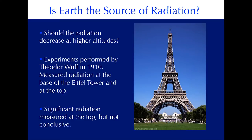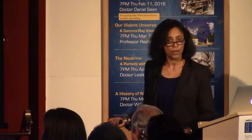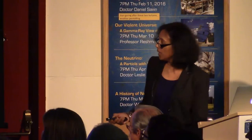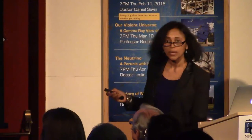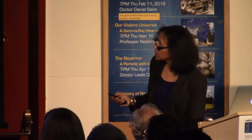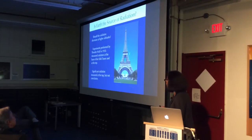Around 1910, there was a scientist called Theodore Wolf. His assumption was that if you're losing charge, the air around you must be ionized — where is this coming from? Well, a natural deduction is maybe it's coming from the earth, that there is radiation coming from the earth causing the electroscope to discharge. So he said, why don't we prove that? He took his electroscope — he was in Paris, and the tallest building available to him was the Eiffel Tower, 300 meters tall — and he took it up to the top of the Eiffel Tower.